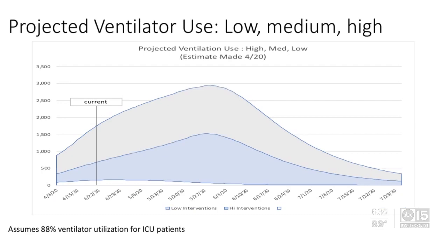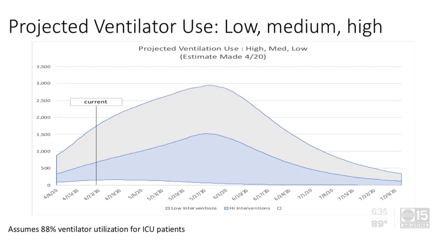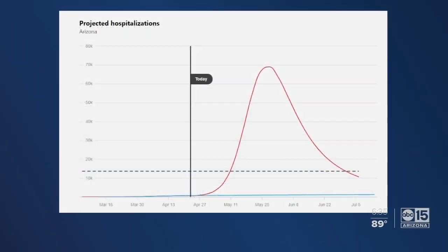Our graphs are only as good as the data coming in — our projections can only be as good as the input. Looking at data all across the country and across counties here in Arizona, what snapshot of data have you found in the past 24 hours that you find the most intriguing?